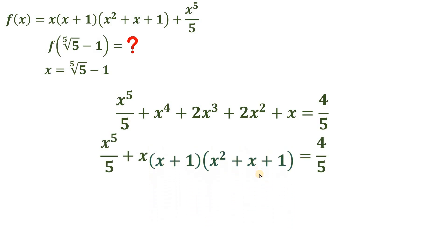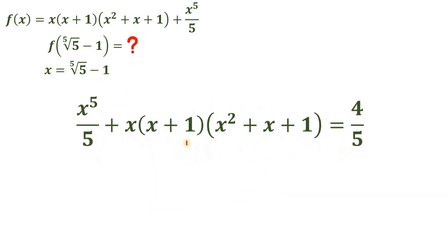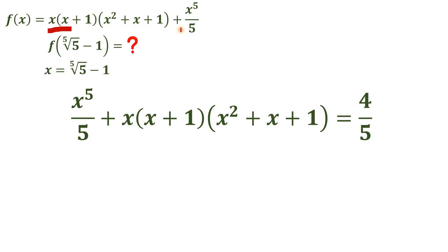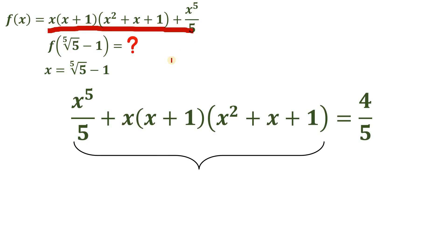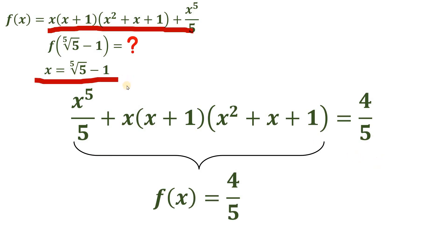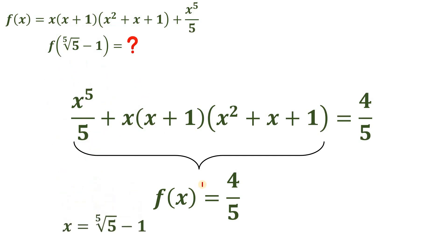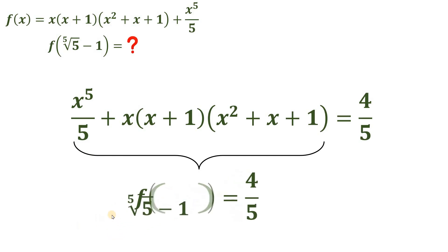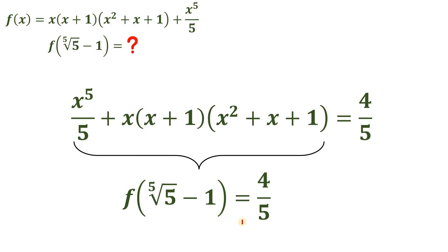So let's replace this. Technically speaking, this part right here is just f of x — we have x times x plus 1 times x squared plus x plus 1 plus x to the 5th over 5, which is exactly f of x. So we can say that f of x equals 4 over 5. Since we let x equal the 5th root of 5 minus 1, we get f of the 5th root of 5 minus 1 equals 4 over 5. That is our answer.